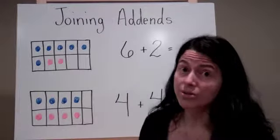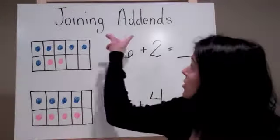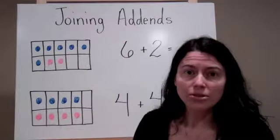So the next thing that we want to use our tens frames for is joining addends. So for example,